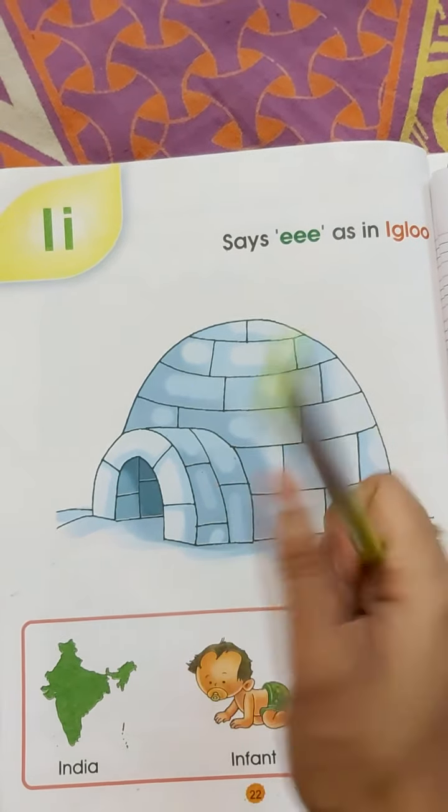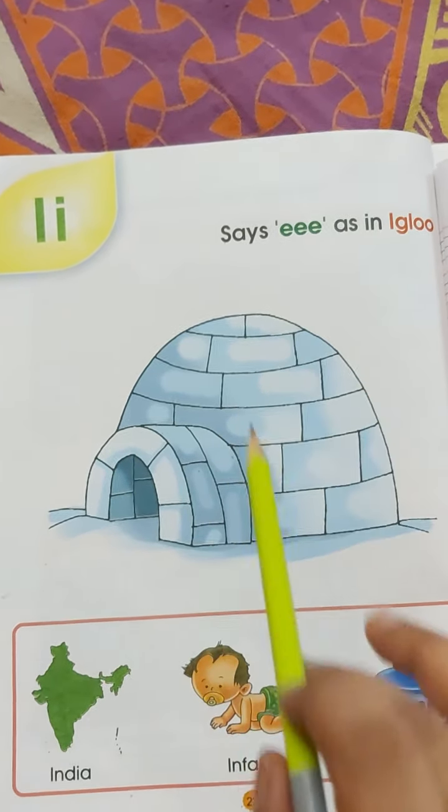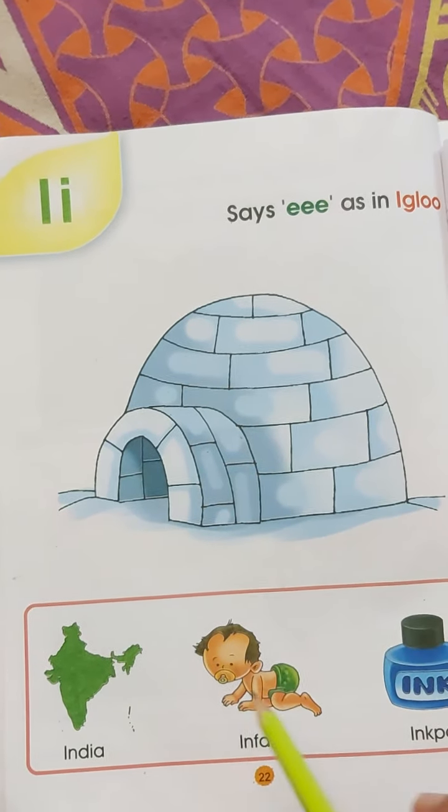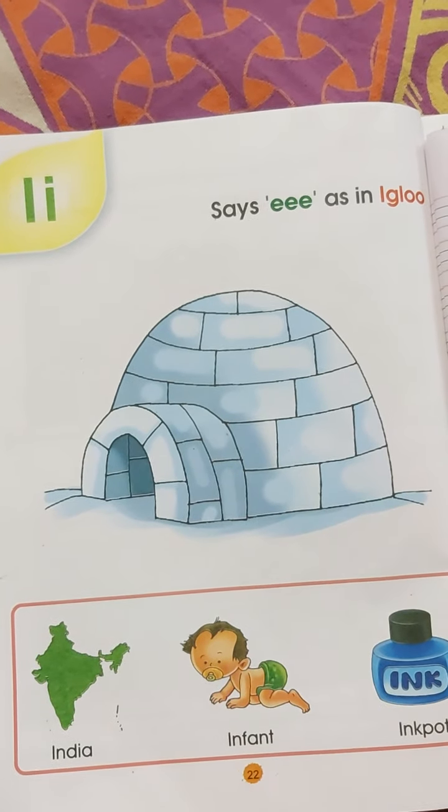One second, repeat after me. I, E, Igloo. I, E, India. I, E, Infant. I, E, Inkpot. Okay?